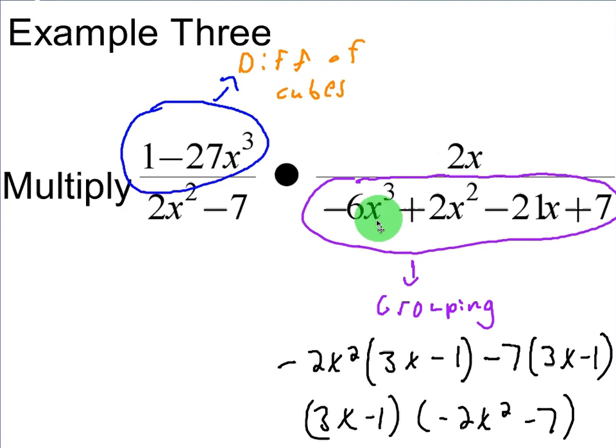So right off the bat, we will pull out a negative 2x squared from the first two, like that. On the second two, we'll pull out a minus 7. So you're left with negative 2x squared times 3x minus 1 minus 7 times 3x minus 1.